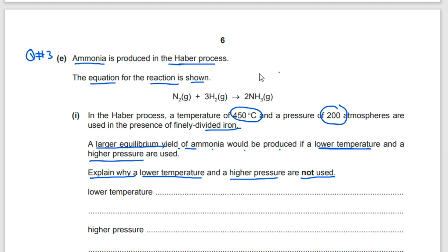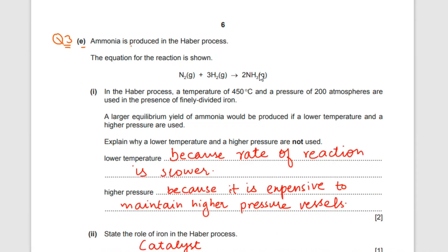The reason is: lower temperature slows down the reaction, and higher pressure is very expensive to build up the higher pressure vessels. So: lower temperature — because rate of reaction is lower; higher pressure — because it is expensive to maintain higher pressure vessels.